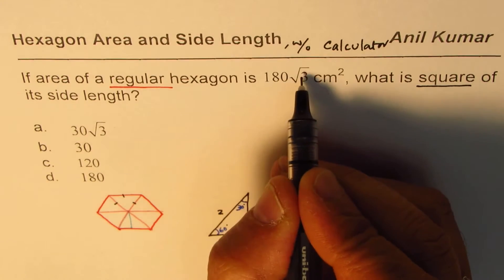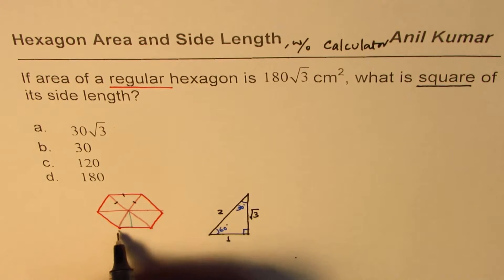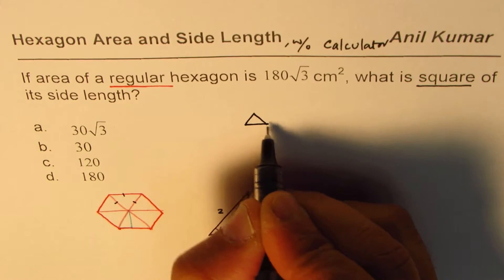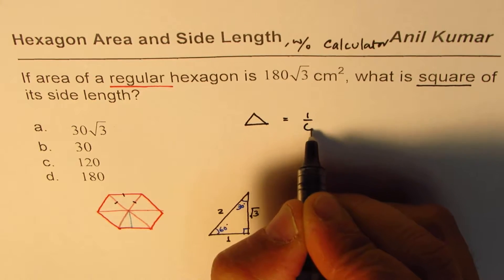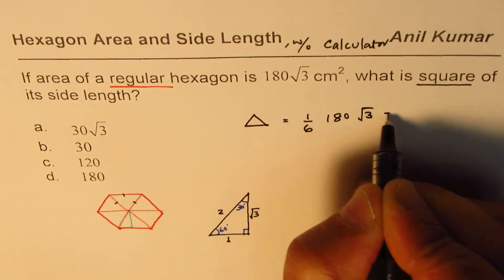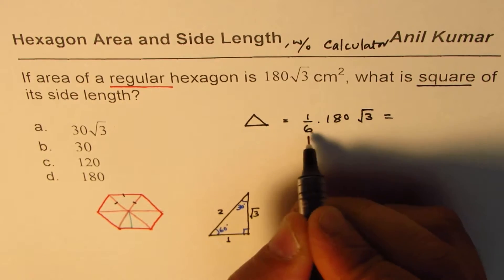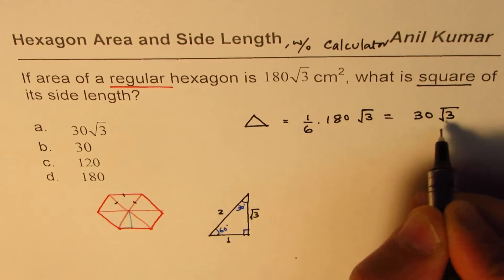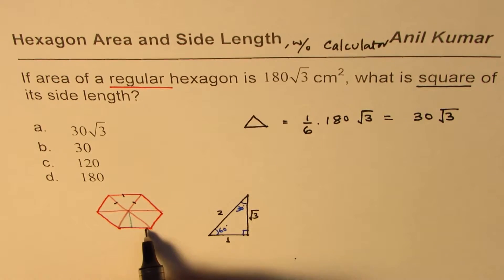First thing which we understand is that area of hexagon is 180 square root 3. So what is the area of a triangle? Area of a triangle is 1/6 of 180 square root 3. So 180 divided by 6 is 30, so it is 30 square root 3. So 30 square root 3 is area of one triangle.